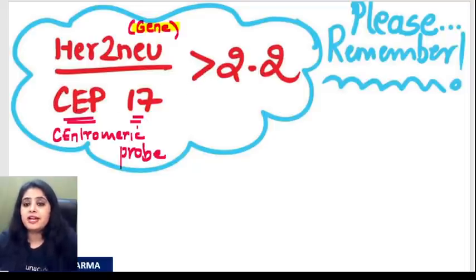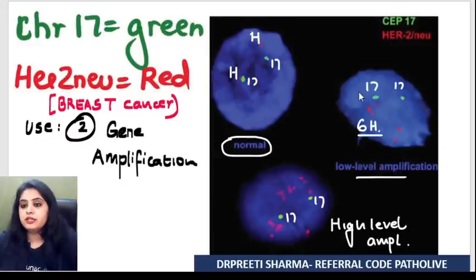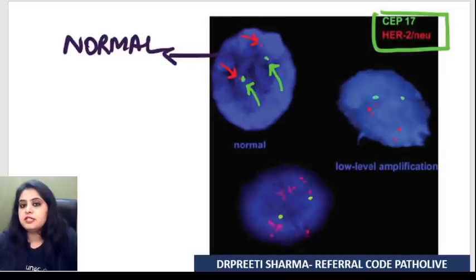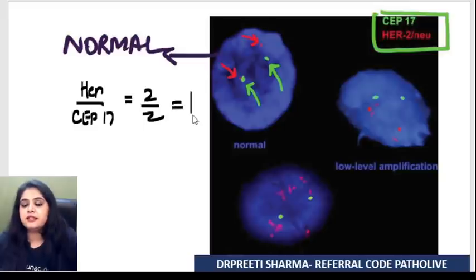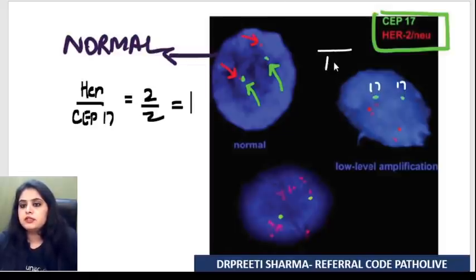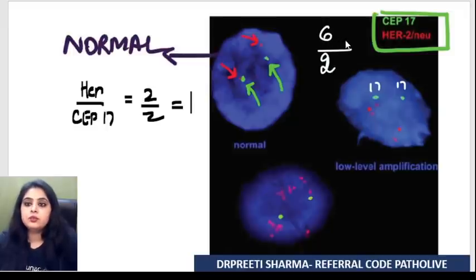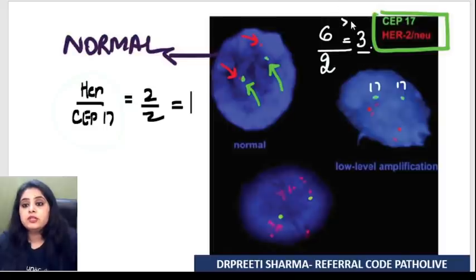Let me make you practice this. In the normal one: HER2/neu upon CEP17 is 2 over 2, equivalent to 1 — everything is fine. In the low-level amplification: denominator is 2 (two chromosome 17s) and HER2/neu is at least 6, so the ratio is 3 — more than 2.2, so this is an amplification.